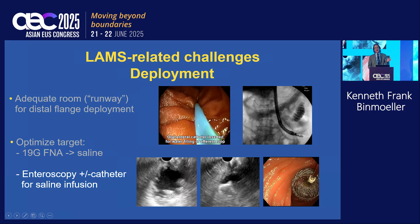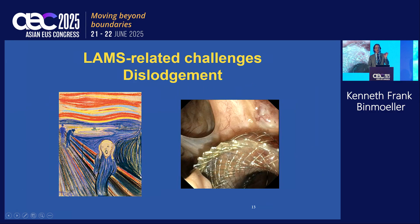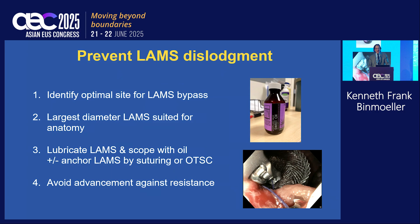In patients where you're not able to adequately distend with 19-gauge saline infusion, you can perform an enteroscopy and infuse saline directly into that limb. You have to be quick when you exchange out for your echoendoscope. The greater nemesis is dislodgement of your LAMS.